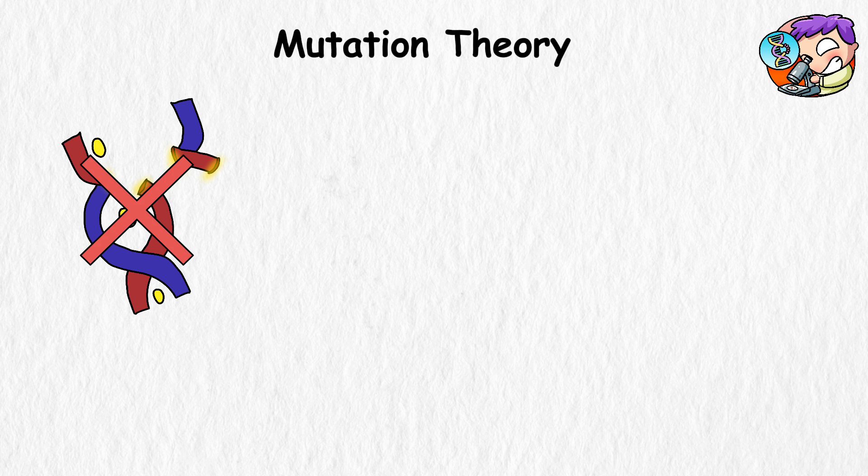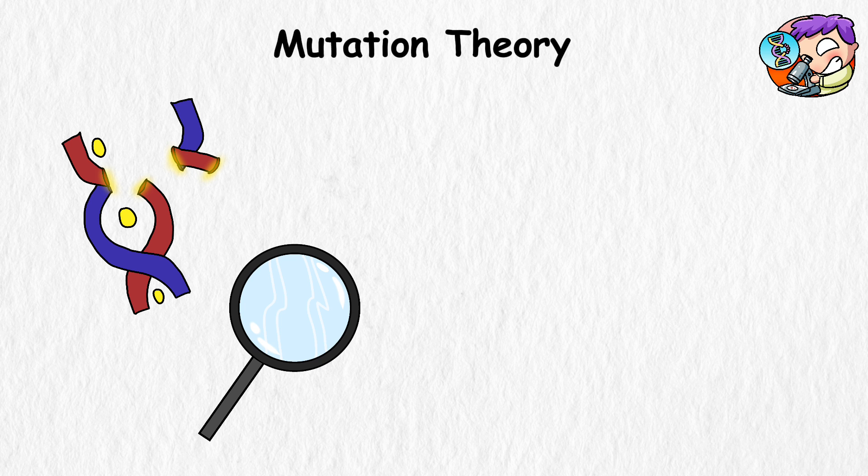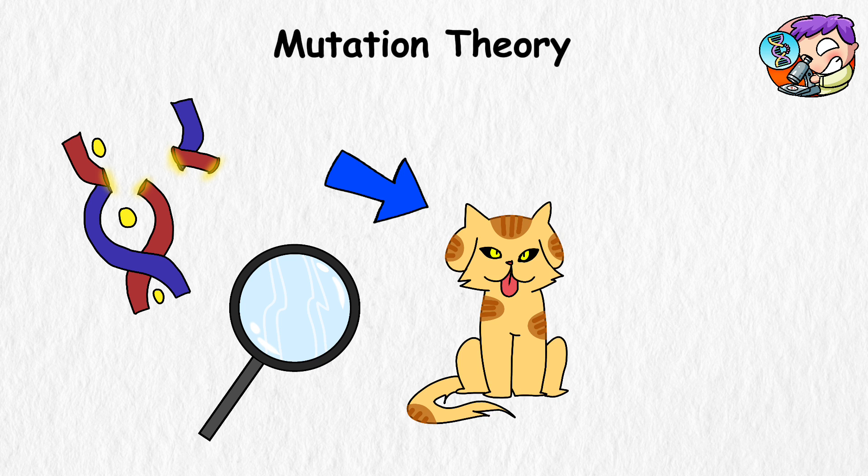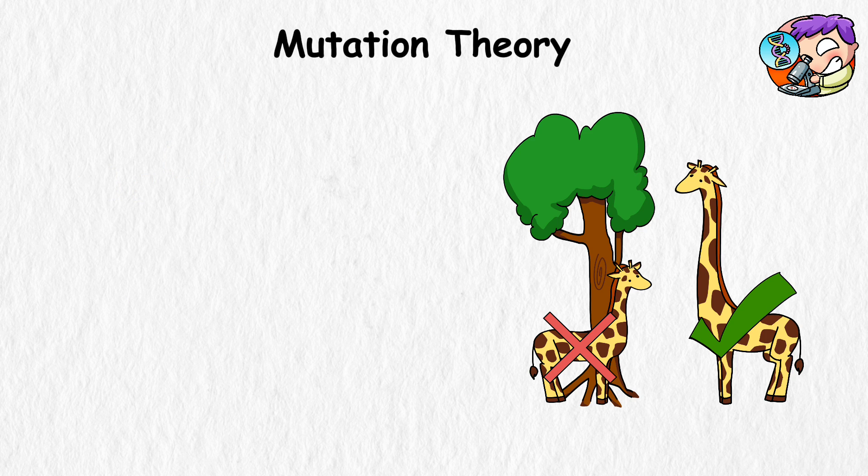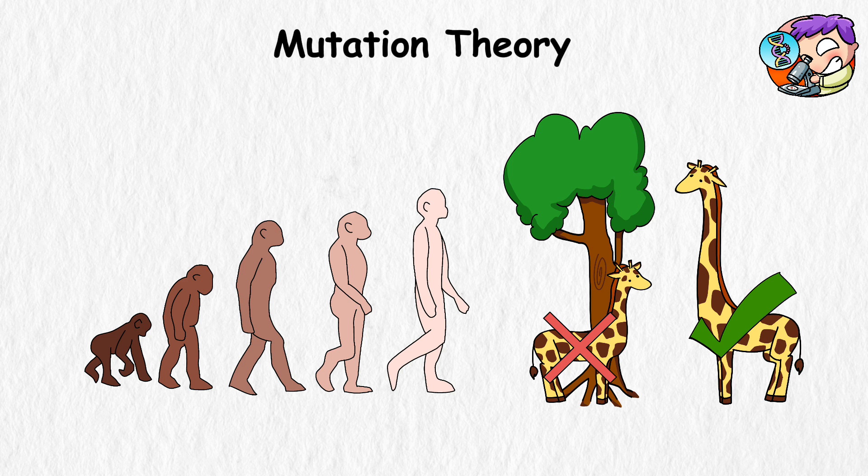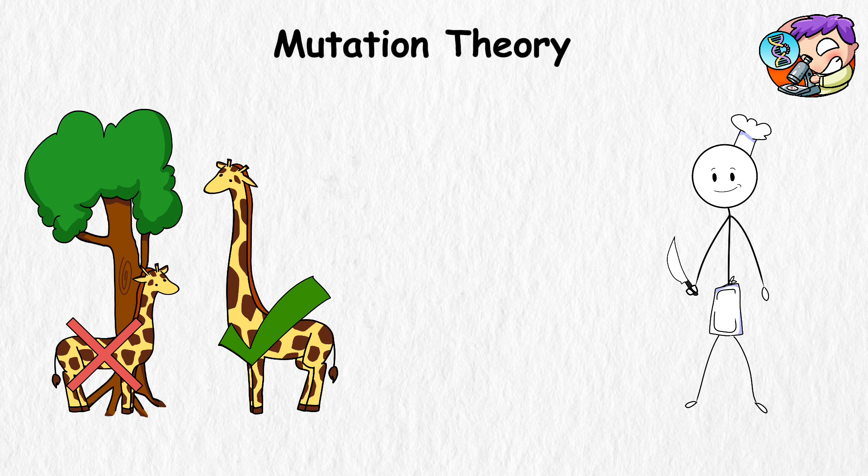But mutation theory isn't as popular today as it once was because there hasn't been any evidence proving that a mutation can lead to the rise of a new species. Nowadays, scientists blend it with natural selection to try to explain evolution. Think of this theory as the chef, while natural selection is the food blogger deciding whether the dish is good.